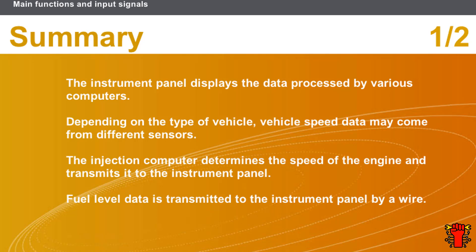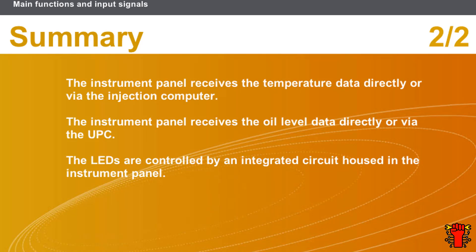In this section, we covered the following points: The Instrument Panel displays the data processed by various computers. Depending on the type of vehicle, vehicle speed data may come from different sensors. The Injection Computer determines the speed of the engine and transmits it to the Instrument Panel. Fuel level data are transmitted to the Instrument Panel by a wire. The Instrument Panel receives the temperature data directly or via the Injection Computer. The Instrument Panel receives the oil level data directly or via the UPC. The LEDs are controlled by an integrated circuit housed in the Instrument Panel.